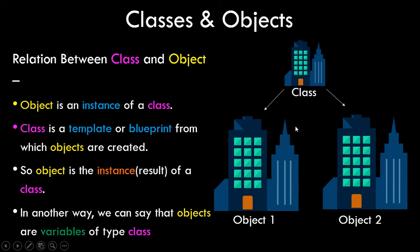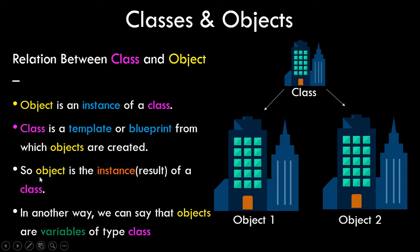Once you have the prototype ready you can create n number of objects. You can also consider class like templates in Microsoft Word — we use them and customize them according to our needs. That template is the class, and when we actually use it we are making an object. So class is a template or blueprint from which objects are created, and an object is one instance — one result — of a class.